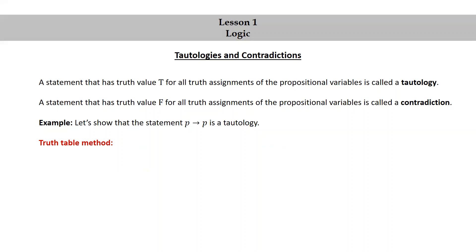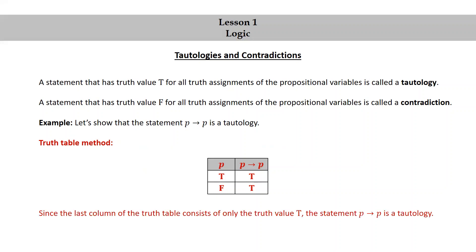Let's also do this using a truth table. The truth table for this is pretty simple. We have a column for p because it's the propositional variable involved, and since it's the only propositional variable there are two truth assignments: T and F. We then have a column for p implies p. True implies true is true, and false implies false is also true. Since the last column of the truth table consists of only the truth value T, the statement p implies p is a tautology.